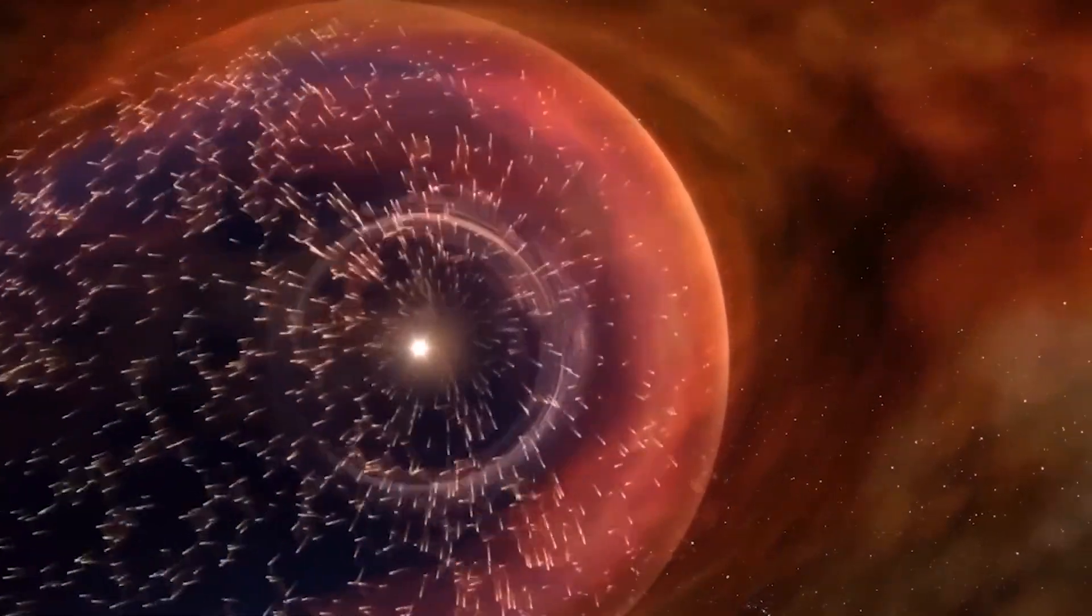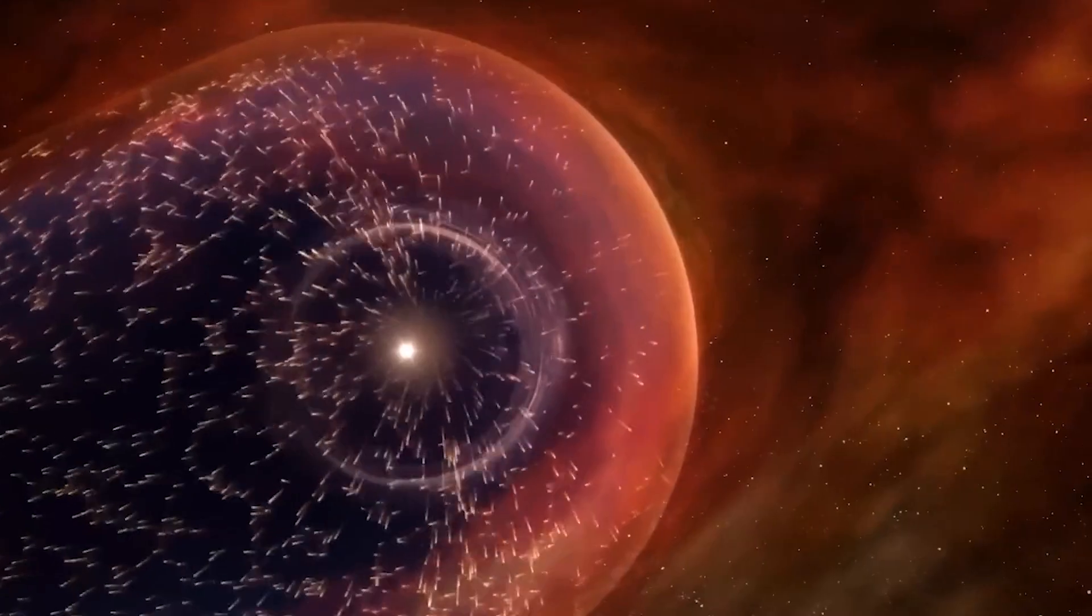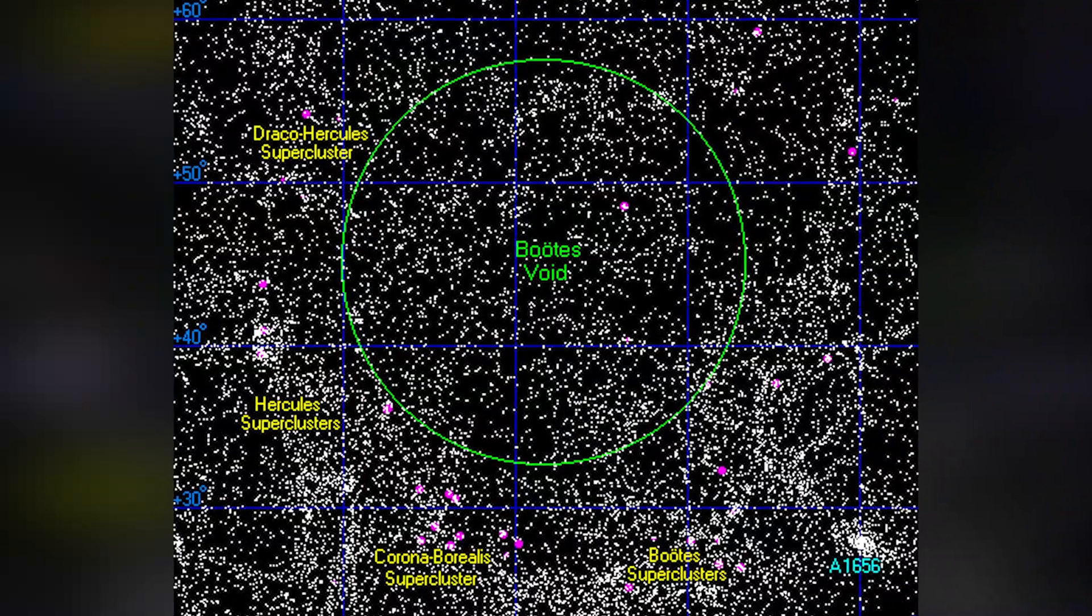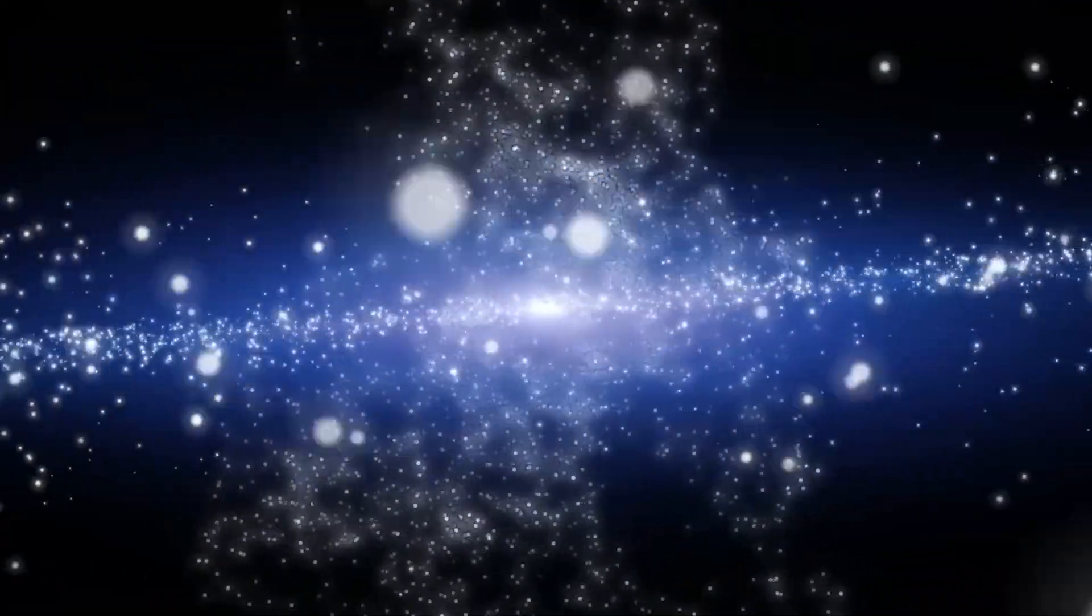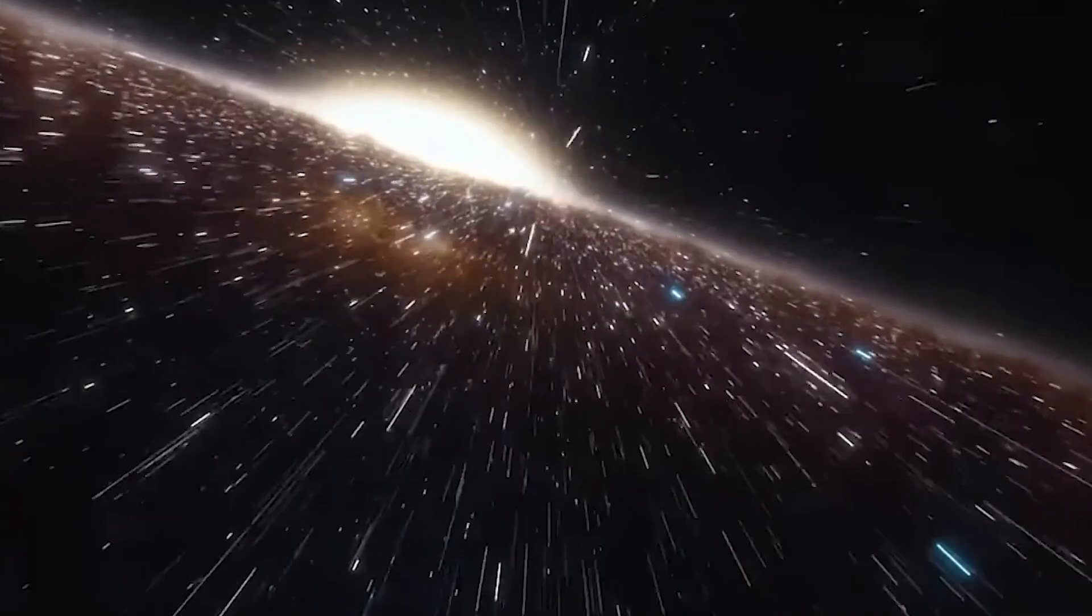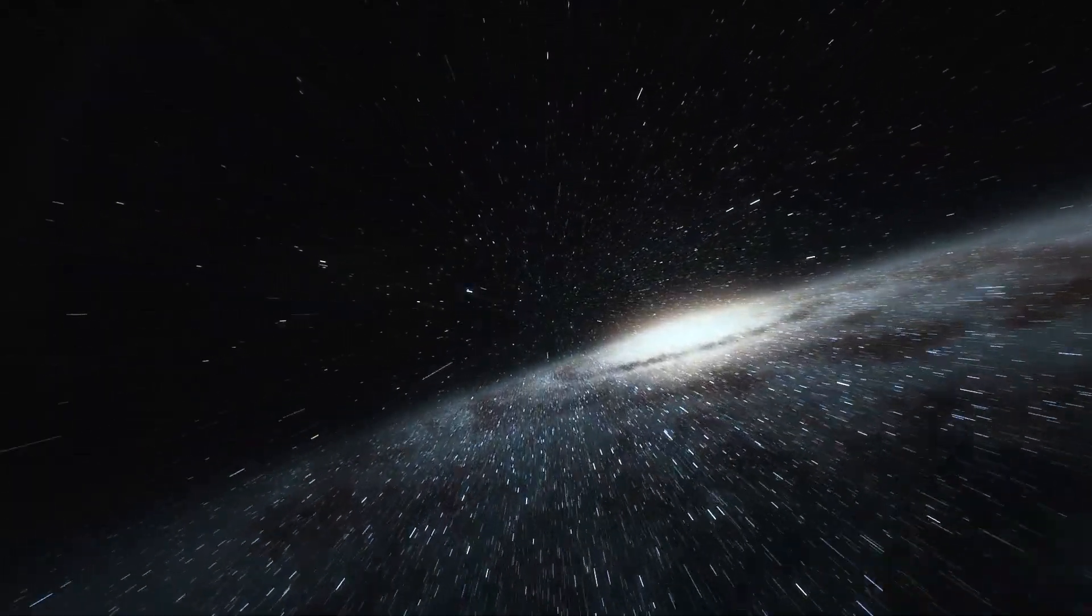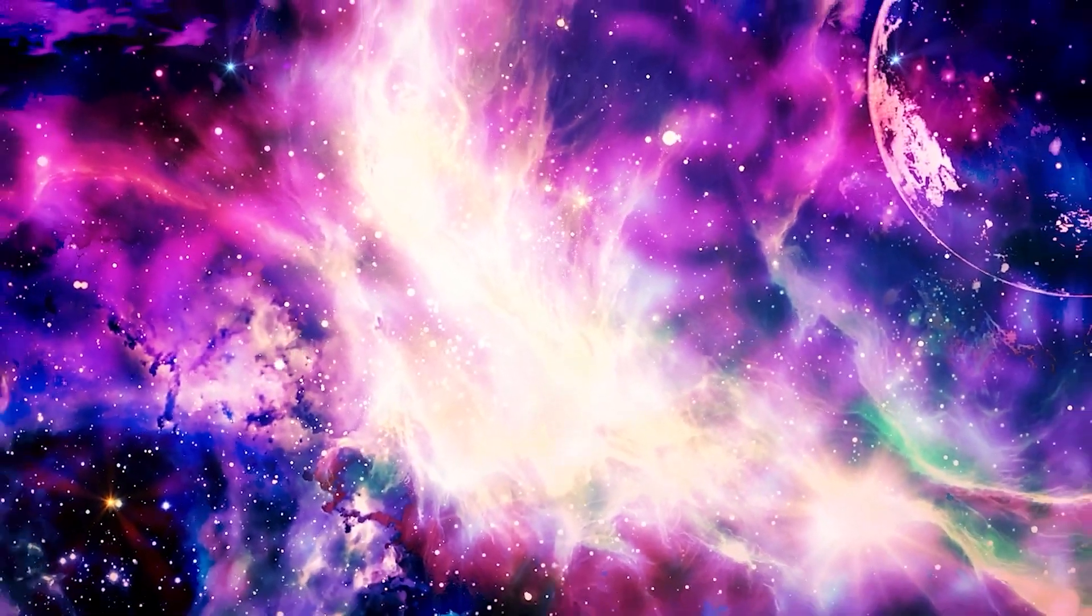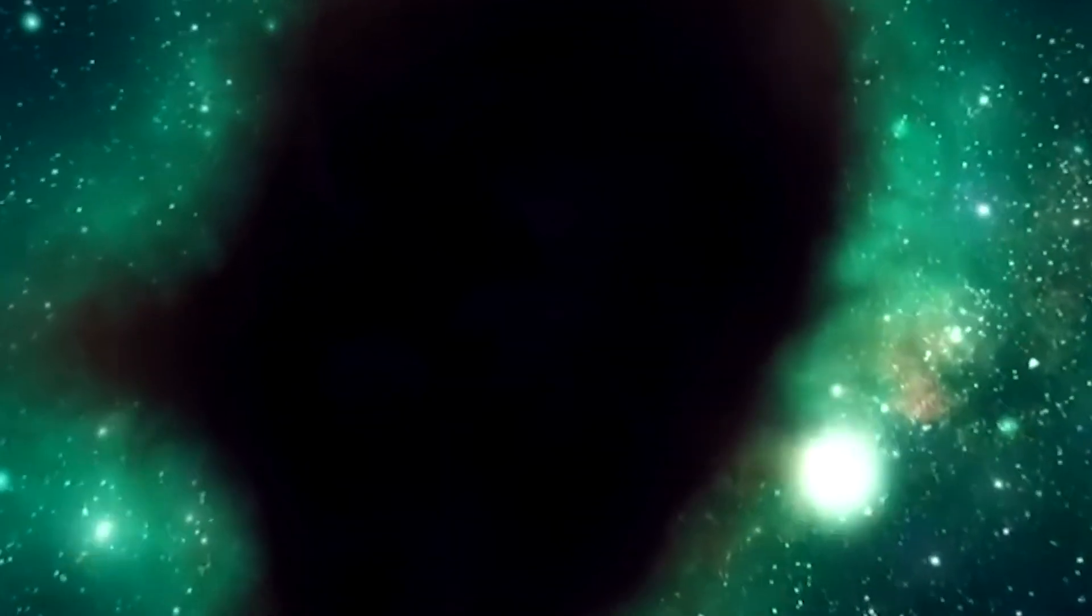Entering the cosmic maze, we encounter two enigmatic voids. First, the Boötes Void, revealed by Robert Kirchner's team in 1981, stands out for its magnitude and emptiness. Located in the Boötes constellation, this cosmic desert holds merely 60 galaxies in a span expected to host 10,000. The void's immense size contradicts this cosmological principle, further piquing curiosity about its galaxy's peculiar tubular arrangement.